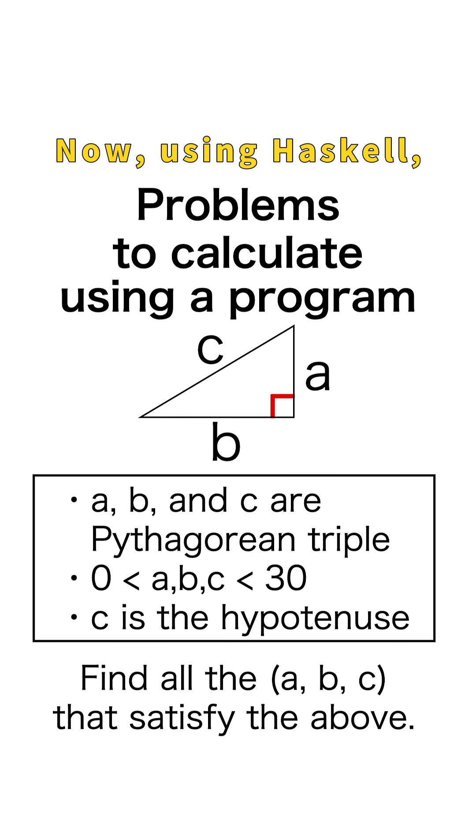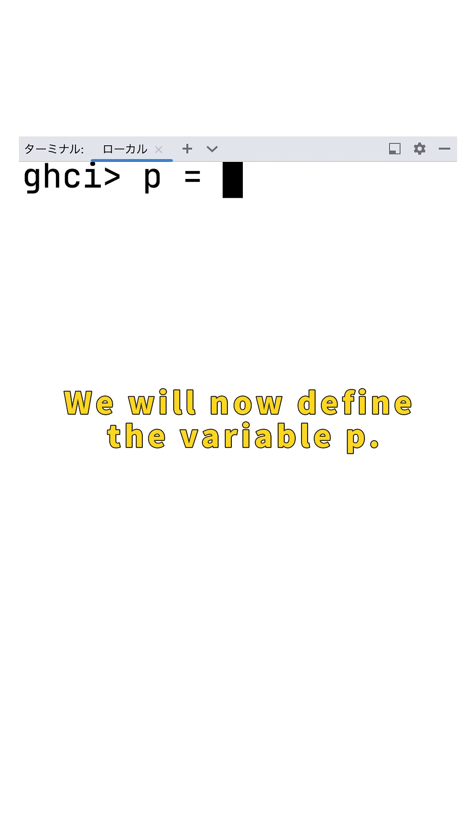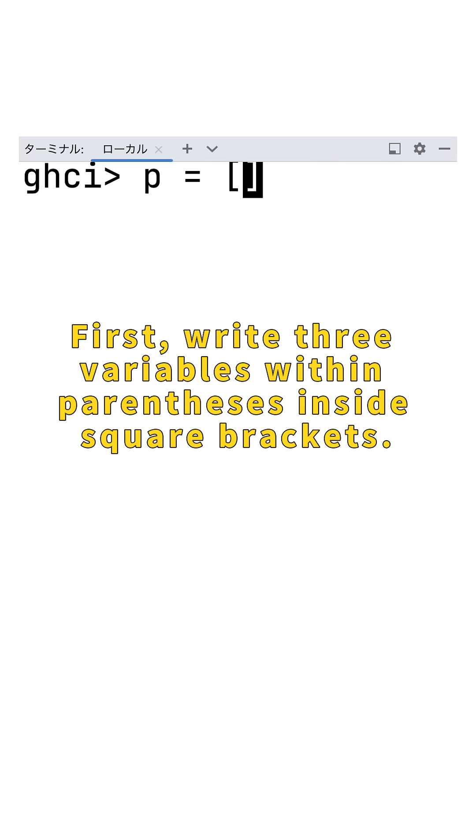Now, using Haskell, we will try to find Pythagorean triples from 1 to 30. We will define the variable p. First, write three variables within parentheses inside square brackets.